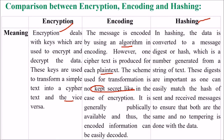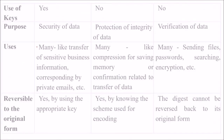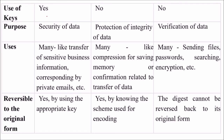With hashing, the data is converted to a message digest or hash — a number generated from a string of text. These digests are important as one can easily match the hash of sent and received messages to ensure that both are the same and no tampering has been done with the data. Encryption uses keys; encoding and hashing do not. The purpose of encryption is security of data, encoding is protection of the integrity of data, and hashing is verification of data.